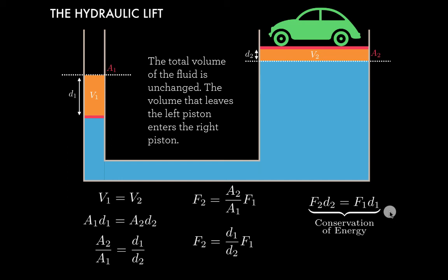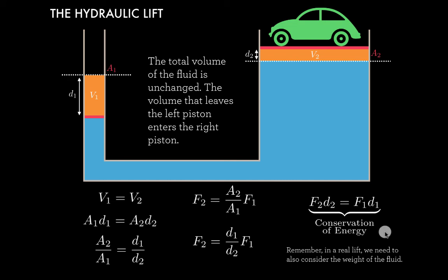We aren't getting something for nothing — if we exert a small force, we have to exert it over a much larger distance. Anyone who has lifted a car with a hydraulic jack knows you need to swing the arm many, many times over a large distance to move the car up only a couple of inches, even though the car experiences a much greater force. We also applied a simplification by neglecting the weight of the fluid — in reality, we also do work lifting that fluid, so there is an extra contribution there, but it doesn't change the essential point that the work done on the small piston goes into moving the car up and moving the liquid up.